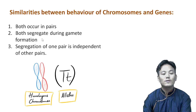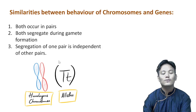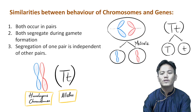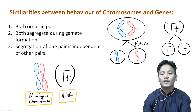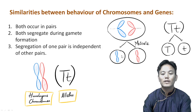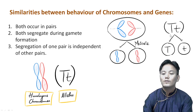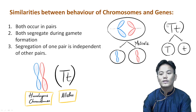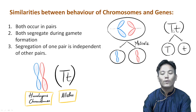The second similarity was that both chromosomes and alleles segregate during gamete formation. During gamete formation, during meiosis, the two homologous chromosomes — one from the father and one from the mother — segregate such that each gamete will get only one. Two gametes are formed and each gamete gets one of the pair. This is just like what Gregor Mendel proposed, when he said that during gamete formation the factors which occur in pairs segregate. So segregation was the similarity between chromosomes and genes.